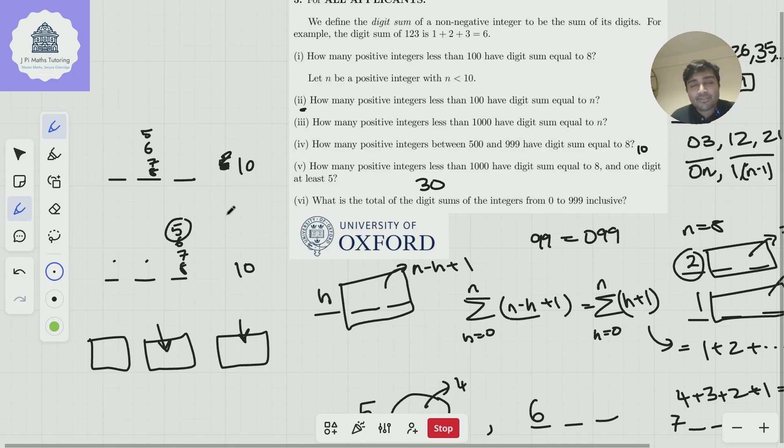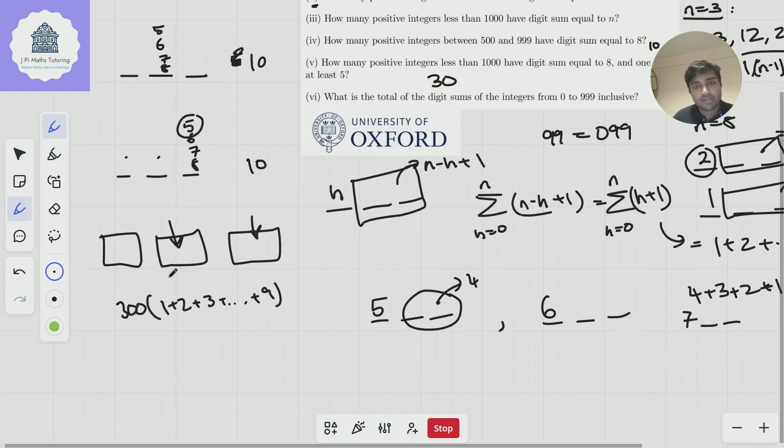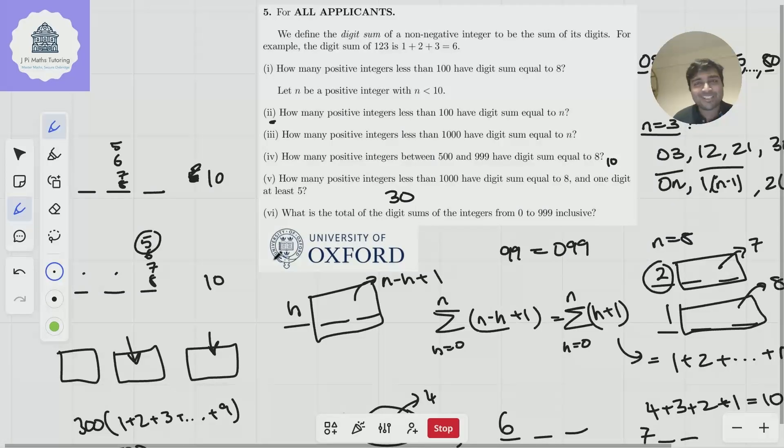So for the digit 8, for example, we're going to have 300 occurrences of the digit 8. So the total is going to be 300 lots of 1 plus 2 plus 3, all the way up to 9, which is 45. So 300 times 45. So 3 times 45 is 135. So this is 13,500. That would be our answer to part 6.